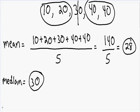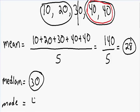Now let's find our mode. Our mode is just the number that occurs the most. Notice how every number occurs once except for 40 — we have two 40s. So because 40 occurs the most, our mode is equal to 40. Now we have found all our measures of central tendency: our mean is equal to 28, our median is equal to 30, and our mode is equal to 40.